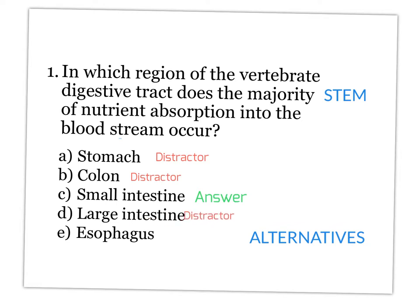Those other possibilities are called distractors. The distractors need to be plausible enough that if a student doesn't know the material, they might consider those as correct, whereas if the students do know the material, they know that only the correct answer is right.